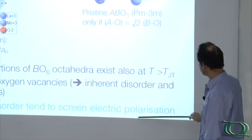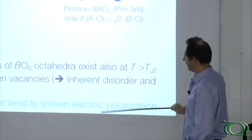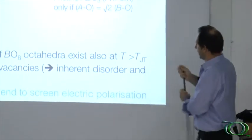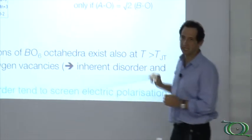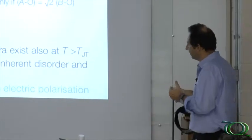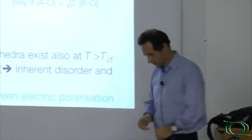We would like to avoid this, especially because disorder and distortions, especially of the oxygens, tend to screen the electric polarization produced by the B ions. So this highly distorted structure weakens the polarization in simple perovskites.